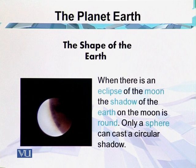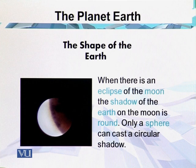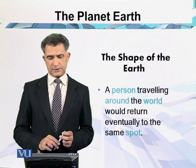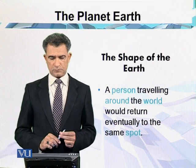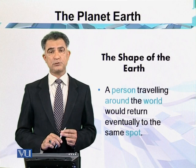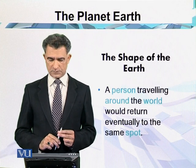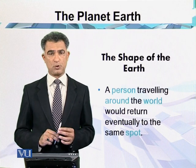A person traveling around the world would eventually return to the same spot — this also demonstrates that the earth is spherical in shape.